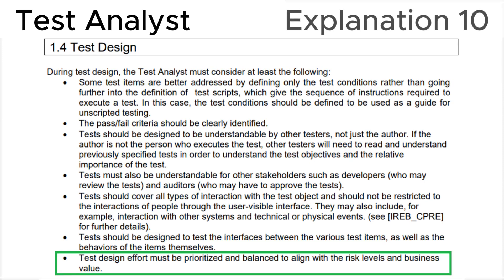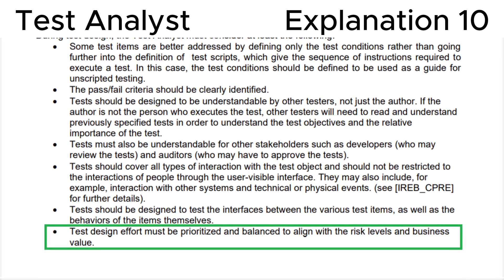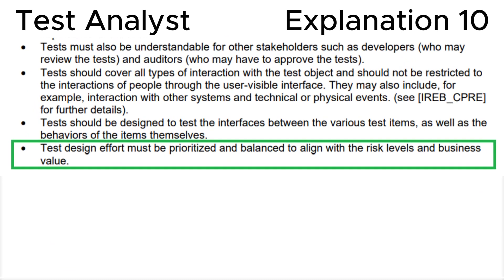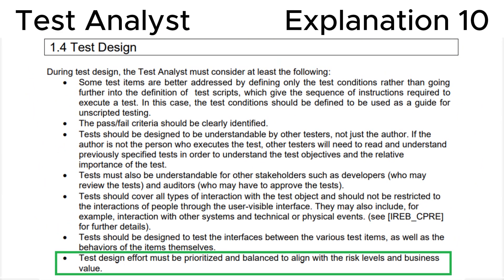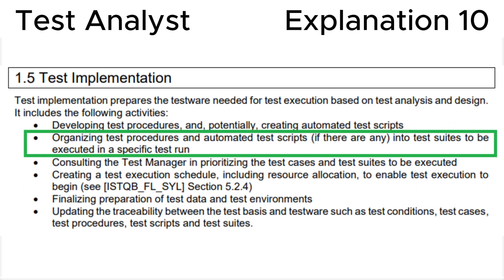To answer this question, let's move to the explanation section. First, let's look at section 1.4, Test Design, in the ISTQB syllabus, where we can see that the design effort must be prioritized and balanced to align with risk levels and business value. This leads us to the first part of the correct answer, C.